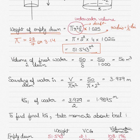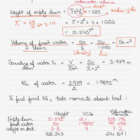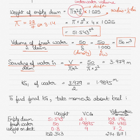We know the fresh water taken in is 50 tons. To find the volume of fresh water: volume = mass ÷ density. Since the density of fresh water is 1, volume = 50 ÷ 1 = 50 cubic meters. The sounding — the height to which water is filled in the drum — is found by volume ÷ area (π·r²), giving the height up to which water was filled.